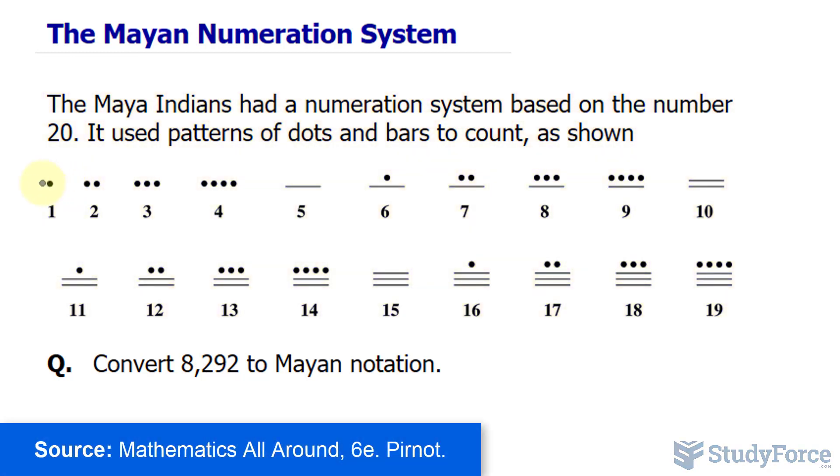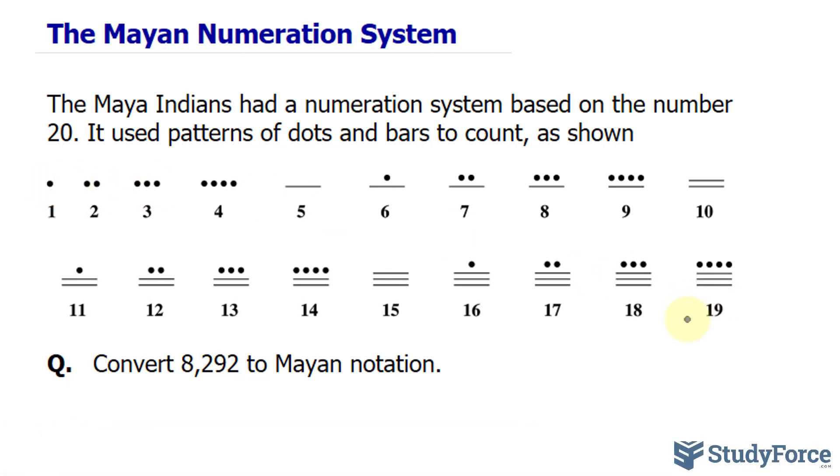Notice that we have pebbles and sticks to represent numbers between 1 and 19. What's not shown here is the symbol used for the number 0. Zero is represented as a shell, and I'll show you how it's drawn with the example prepared.